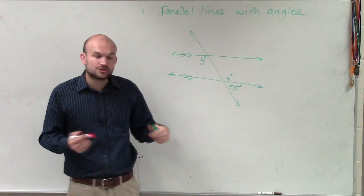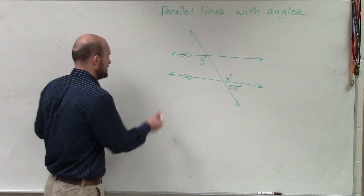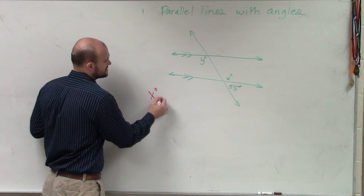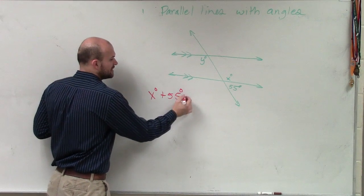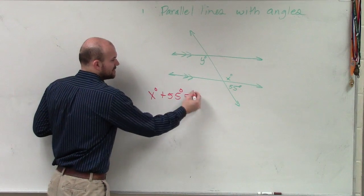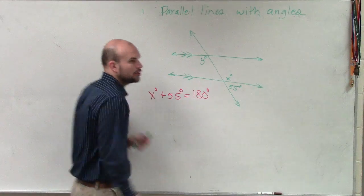However, we know that 55 and x do create a straight line. Therefore, we can call them supplementary angles. And we know that supplementary angles, the sum of supplementary angles, is 180 degrees.